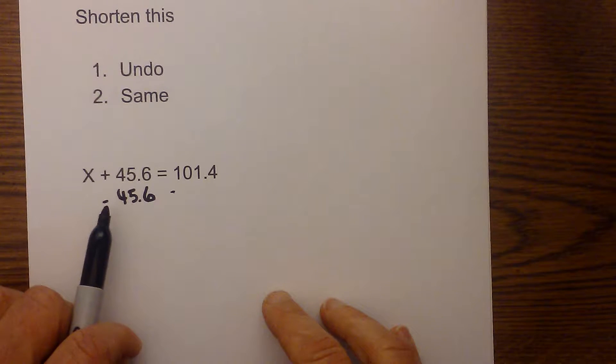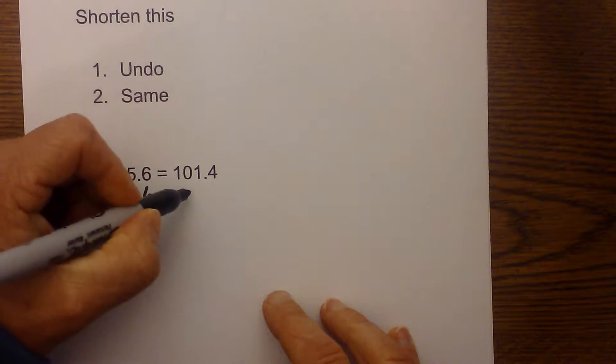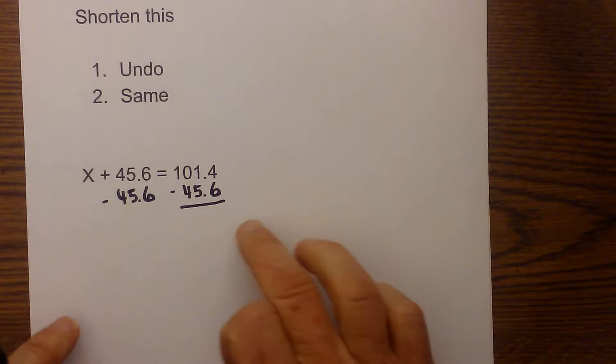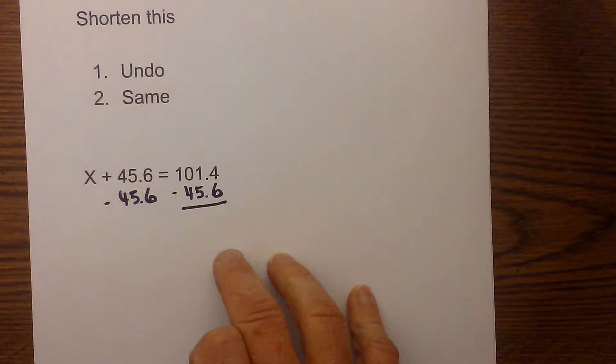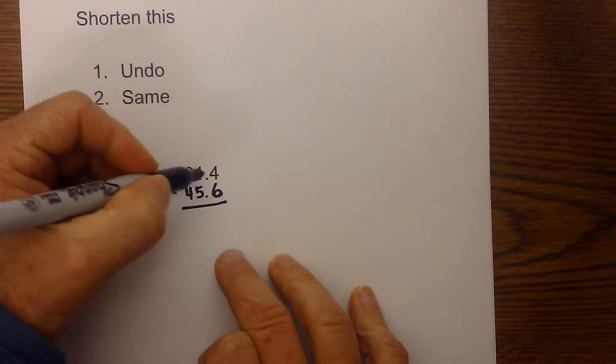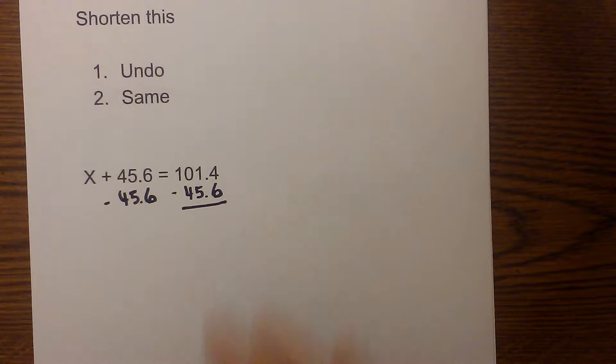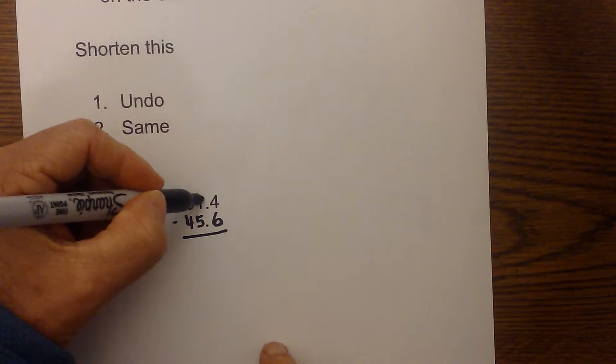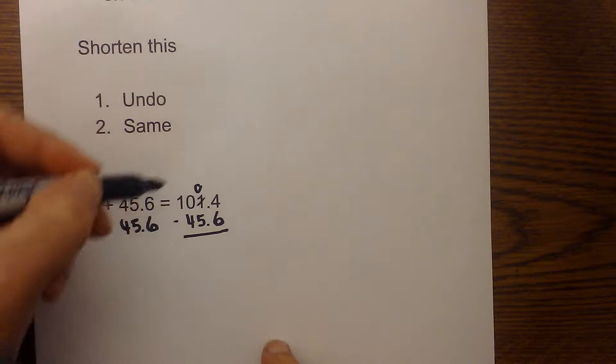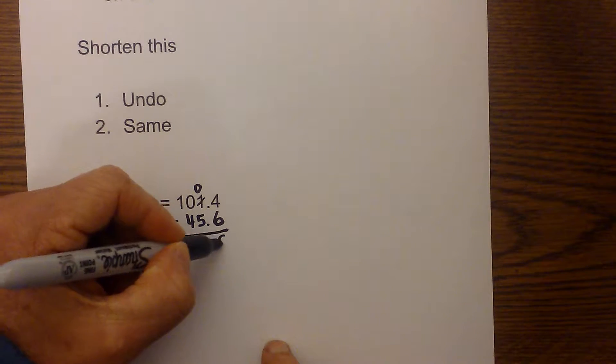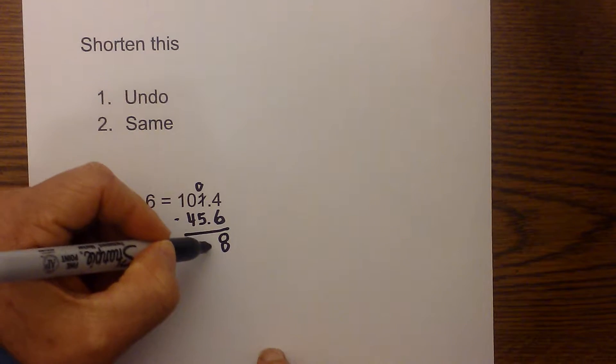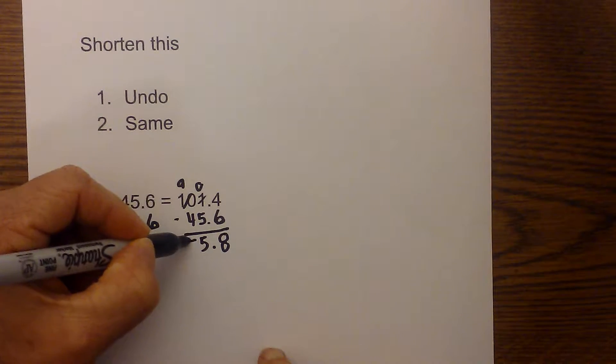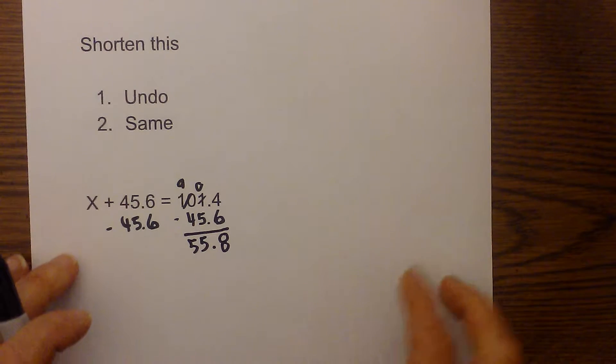Now when you subtract decimals the only thing you need to keep in mind is that the decimals must be lined up. So I am going to do 45.6 and the decimals are lined up properly. And so now I just subtract. I need to borrow 10 from the one here so that will become a zero. 14 minus 6 is 8. 5 goes into 10, 5 and then I had to borrow one here that becomes 9 and so that becomes 5.8. There is your first example.